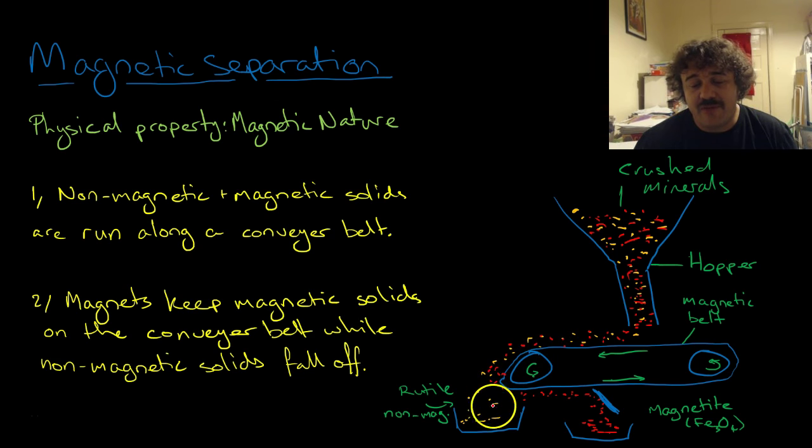And when it hits here, gravity pulls the non-magnetic one off while the magnetic one stays and is pushed off with the scraper.